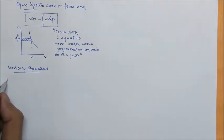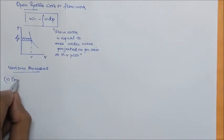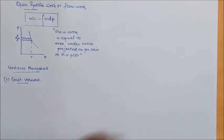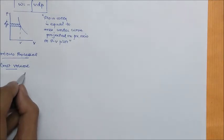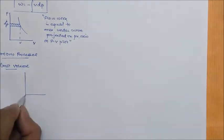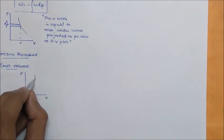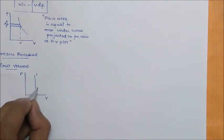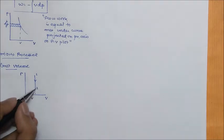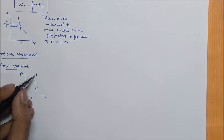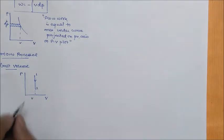The first process is constant volume. There are two states: state one, state two, and the process is going from state one to state two and it is a constant volume process.